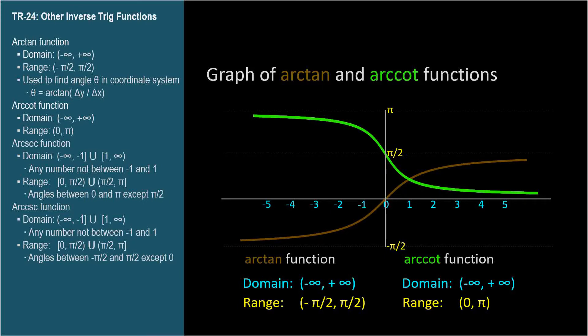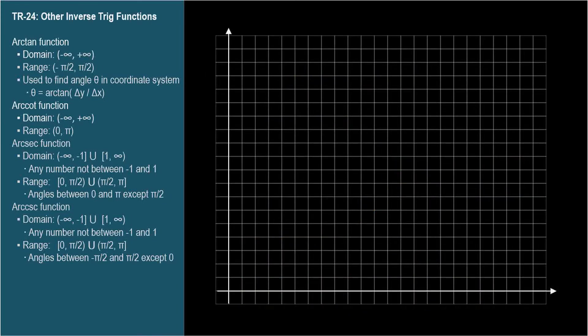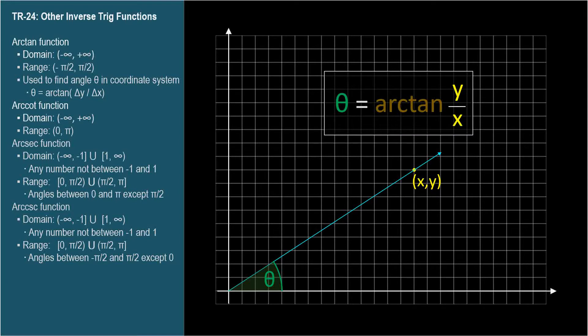Let me show you a common use for arctangent. Suppose we have a point on a coordinate system at x comma y. We want to know the standard position angle theta of a point from the origin through this point. Theta is arctangent y over x. Can you see why?